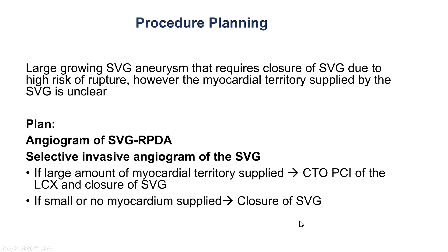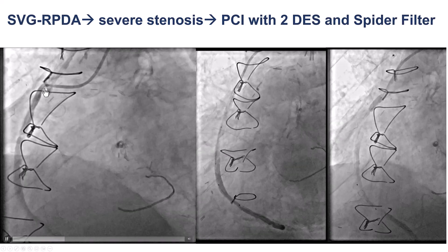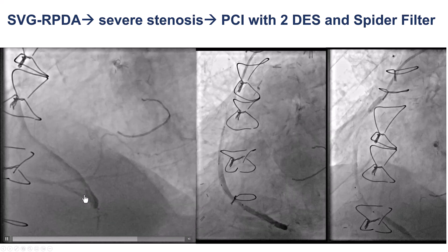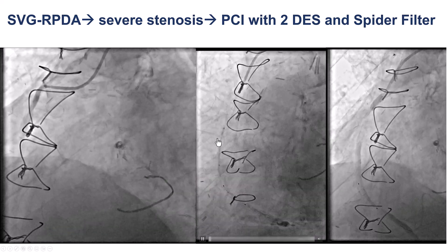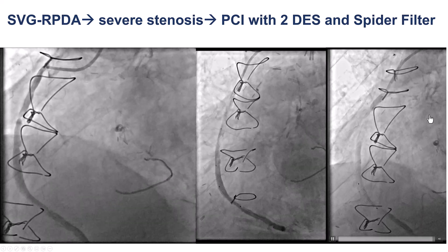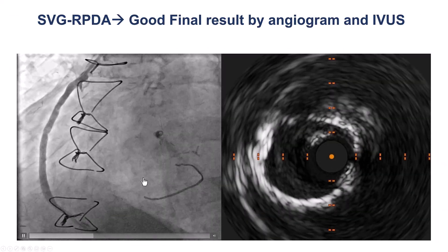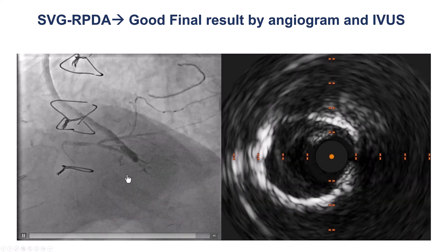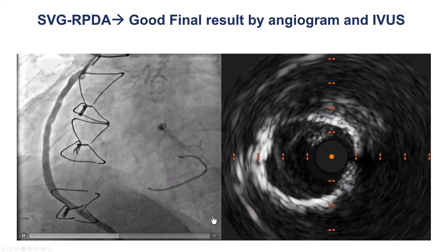This is the angiogram of the vein graft going to the PDA that had significant stenosis in the mid-segment and the ostium, that was successfully treated using a Spider embolic protection device, and this provided a nice result both angiographically as well as by intravascular ultrasound.